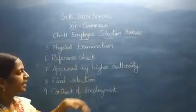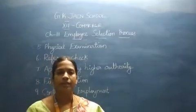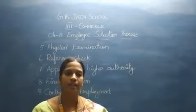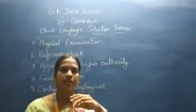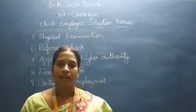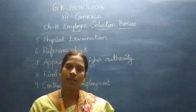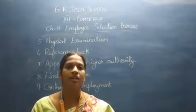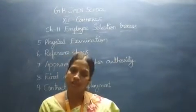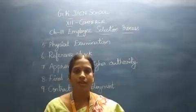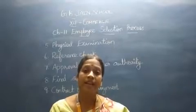Now we have the seventh step: approval by higher authority. After completing all those steps — receiving applications, scrutinizing, conducting tests, conducting interviews, and verifying references — HR prepares a list of chosen candidates. That list is then given to the higher authority, which could be a chairman, MD, or CEO, depending on the organization. The list of selected candidates along with the waiting list candidates is also provided.